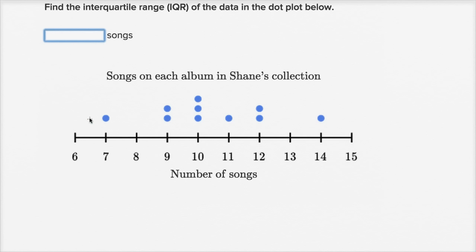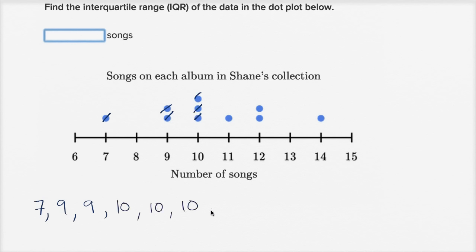We have one album with seven songs, so we have a seven. We have two albums with nine songs, so we have two nines. Then we have three tens — ten, ten, ten. Then we have an eleven. We have two twelves. And then we have an album with fourteen songs — fourteen. So I wrote this data as an ordered list, already in order.